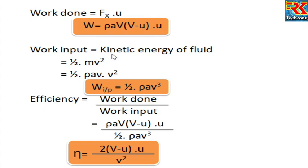Efficiency is work done divided by work input. The numerator is rho A V into (v minus u) into u, and the denominator is half rho A V cubed. Simplifying, efficiency equals 2(v minus u) times u divided by v squared. We must study this equation thoroughly.